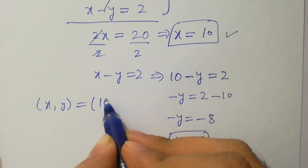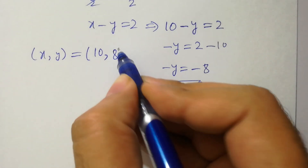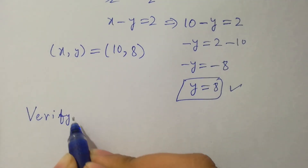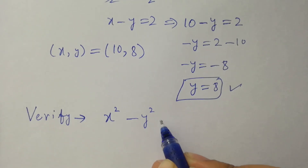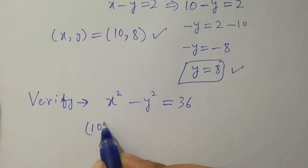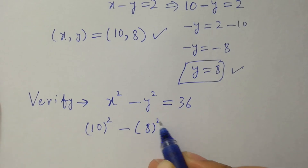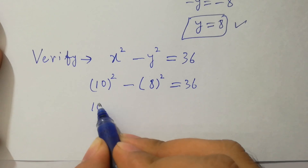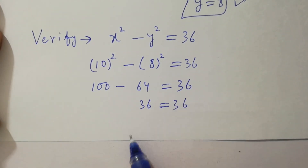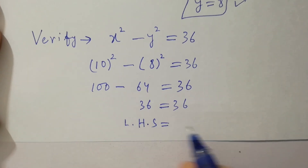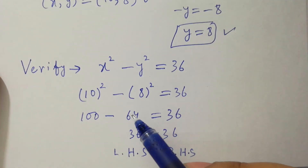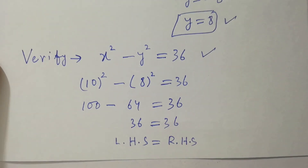So we have the values x equals 10 and y equals 8, both natural numbers. Verification: x squared minus y squared equals 36. Substituting: 10 squared minus 8 squared equals 100 minus 64 equals 36. Left hand side equals right hand side, which shows that x equals 10 and y equals 8 satisfies the equation x squared minus y squared equals 36.